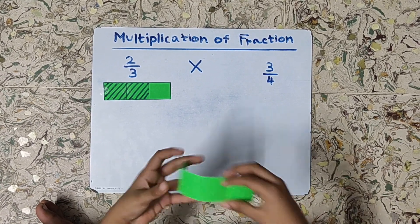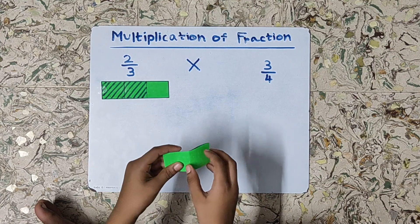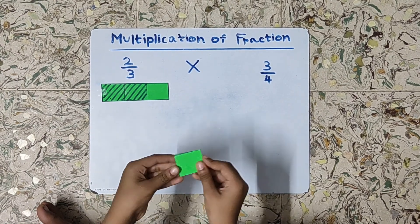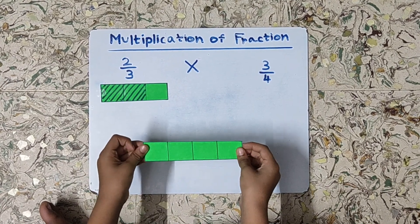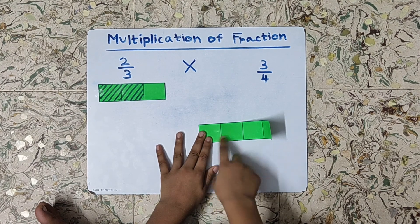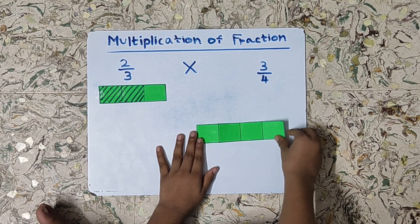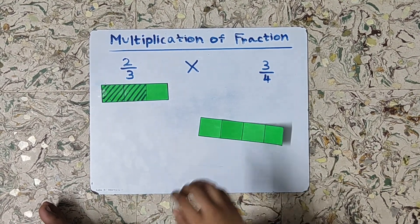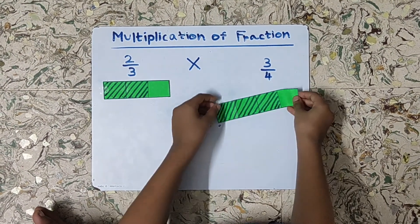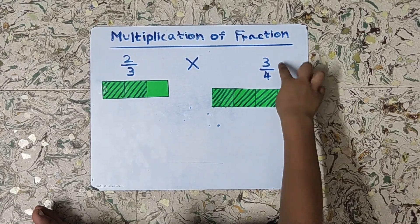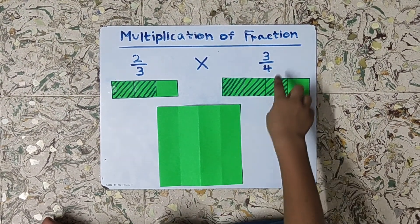Now we will represent three-fourths with the help of a color strip. Take another color strip and fold it into four equal parts. Fold it again, then open the paper. We have four equal parts: one, two, three, and four. Now we will shade three parts out of these four parts because the numerator is three. So now this paper represents three-fourths. We need to find two-thirds of three-fourths.